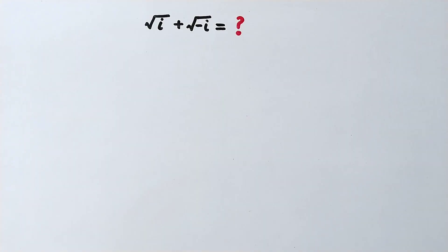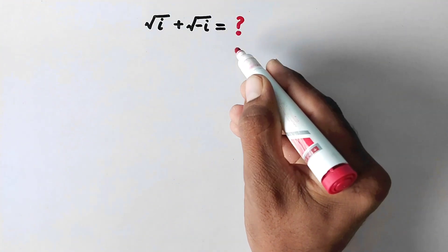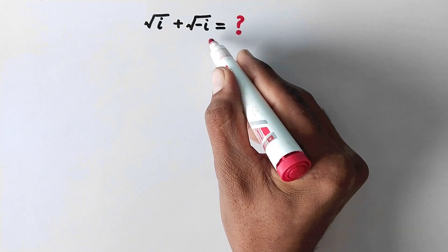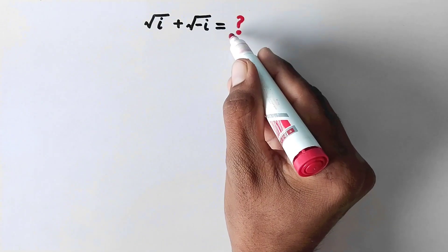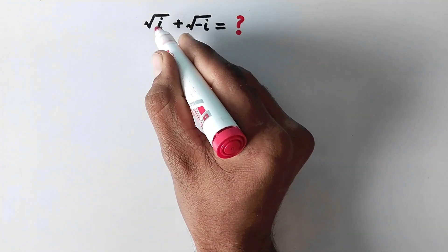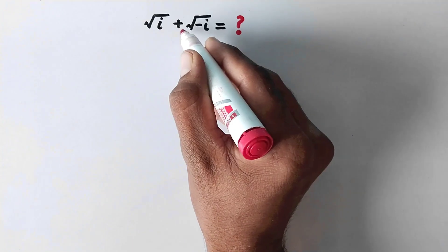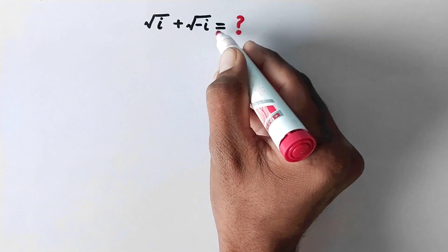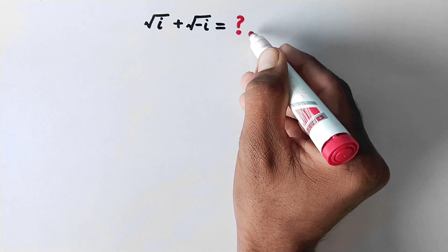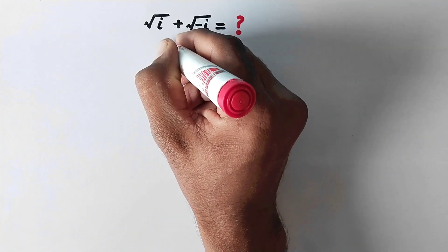Hello everyone and welcome to Explode Maths. Today we have a very nice complex math problem to solve. Square root of i plus square root of negative i is equal to what? Let us see the solution.